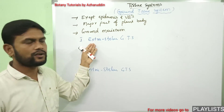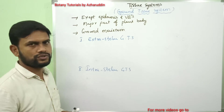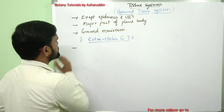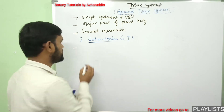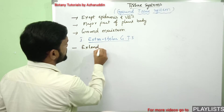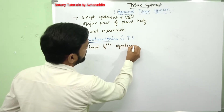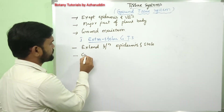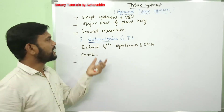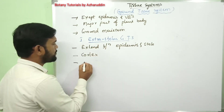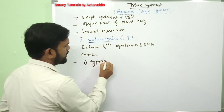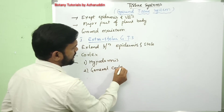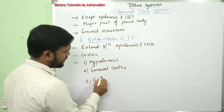The extrastelar or ground tissue system extends between the epidermis and the stele. It is generally called cortex. It is composed of three zones: number one, hypodermis; number two, general cortex; and number three, endodermis.